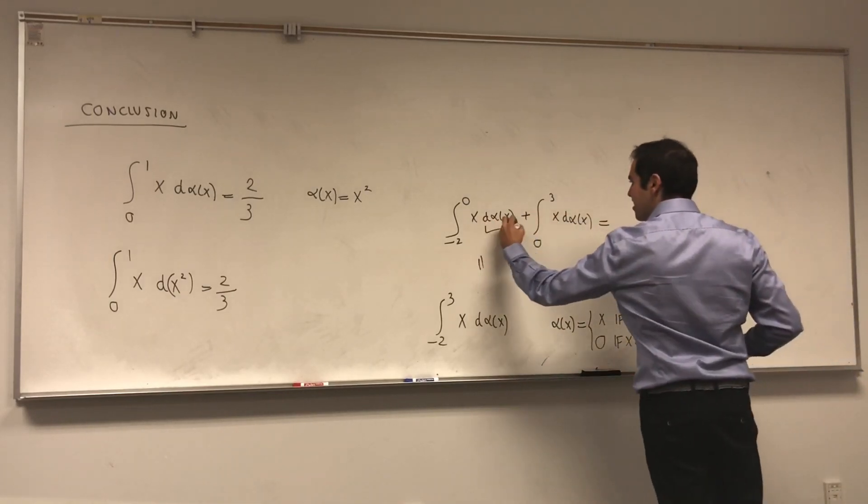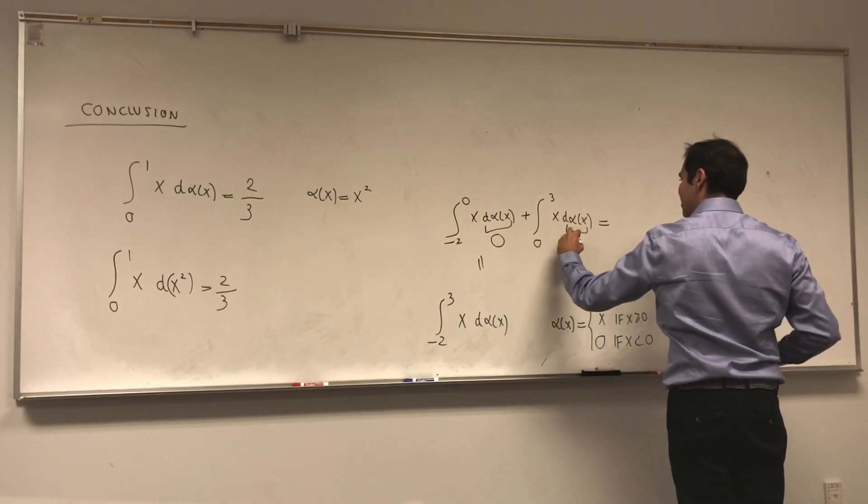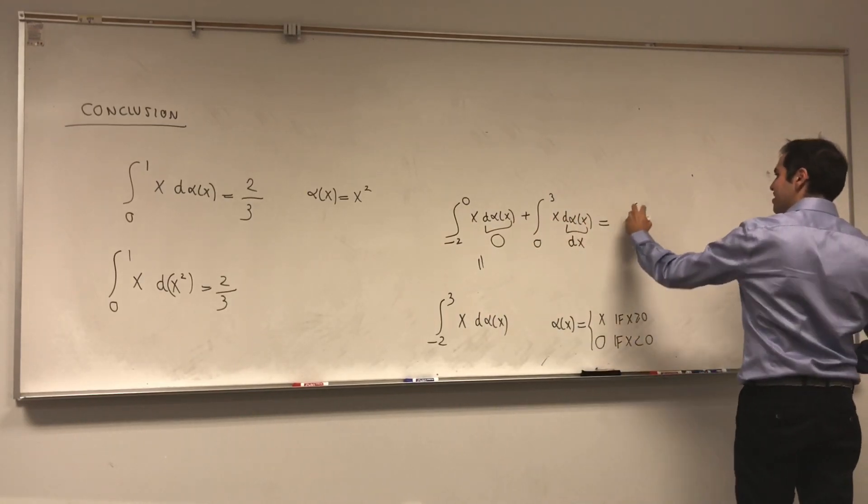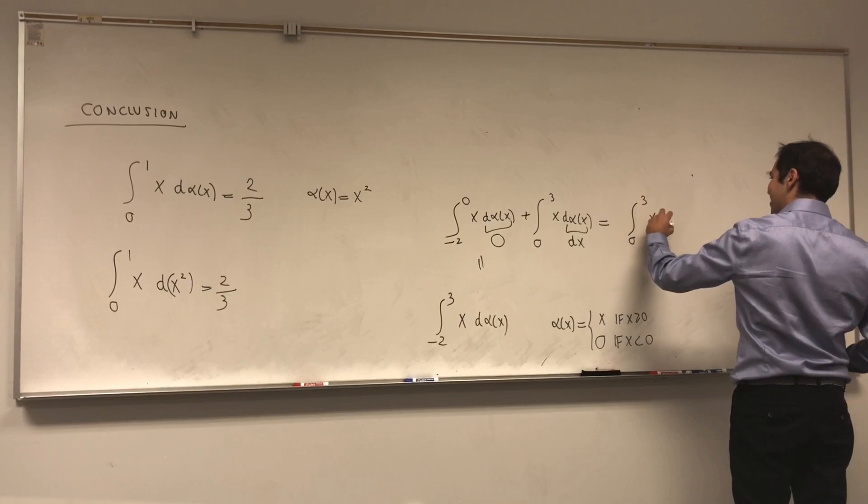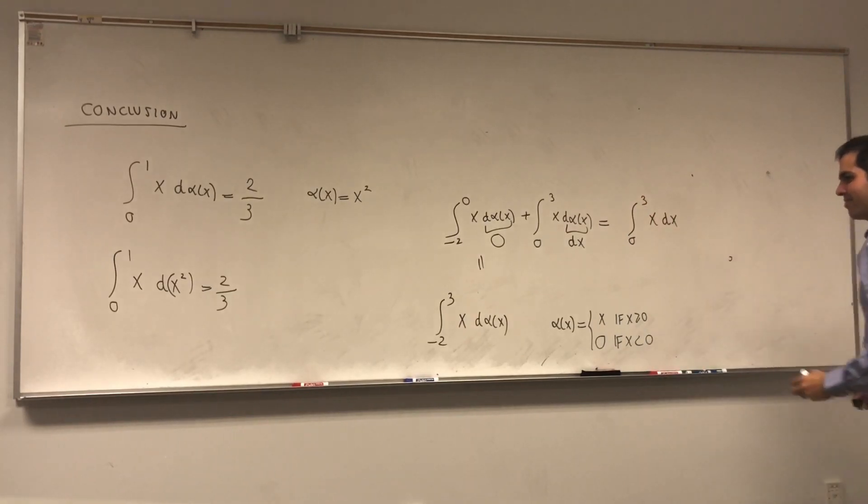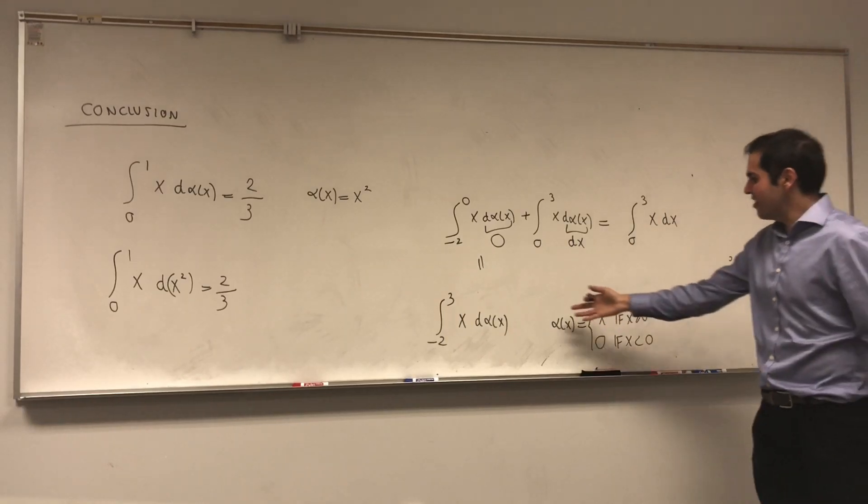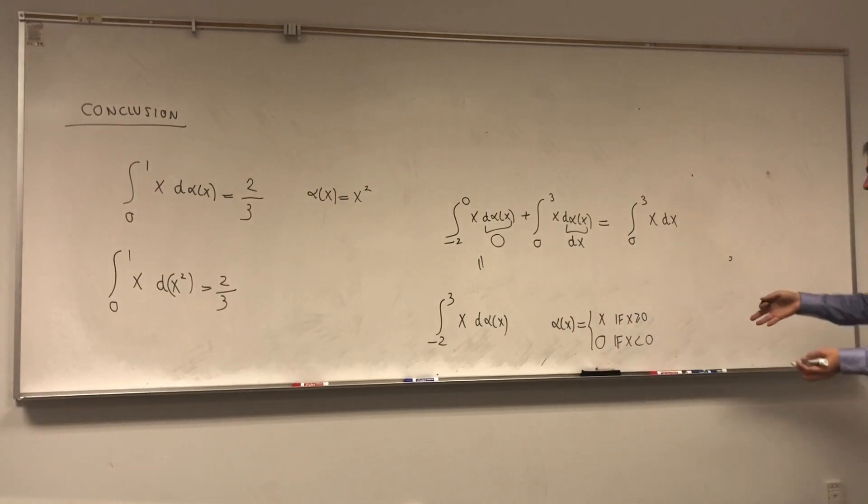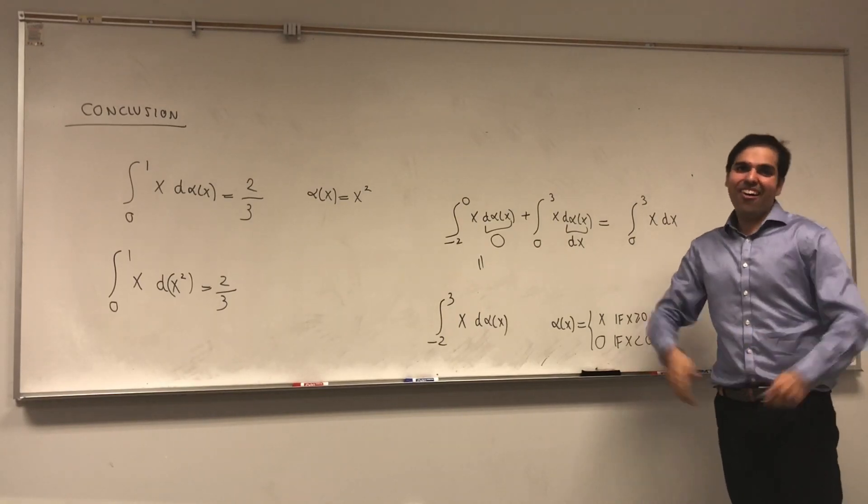then this is just 0, and this is dx, and then it's equal to integral from 0 to 3 of x dx. So the point is the Stieltjes integral also works for discontinuous functions in this way.